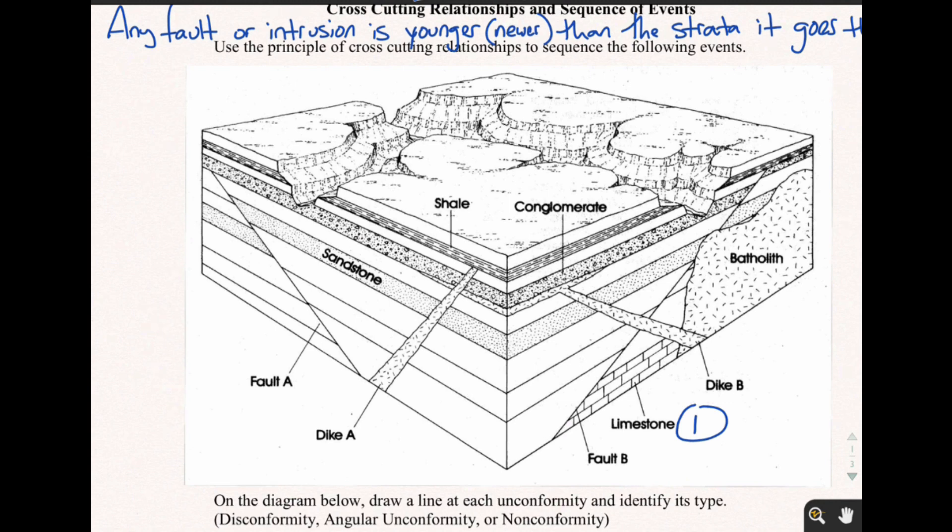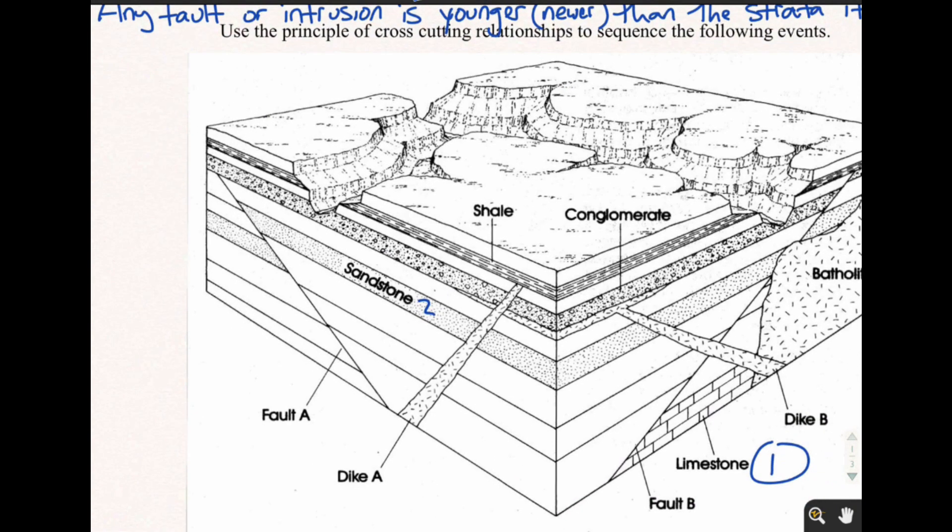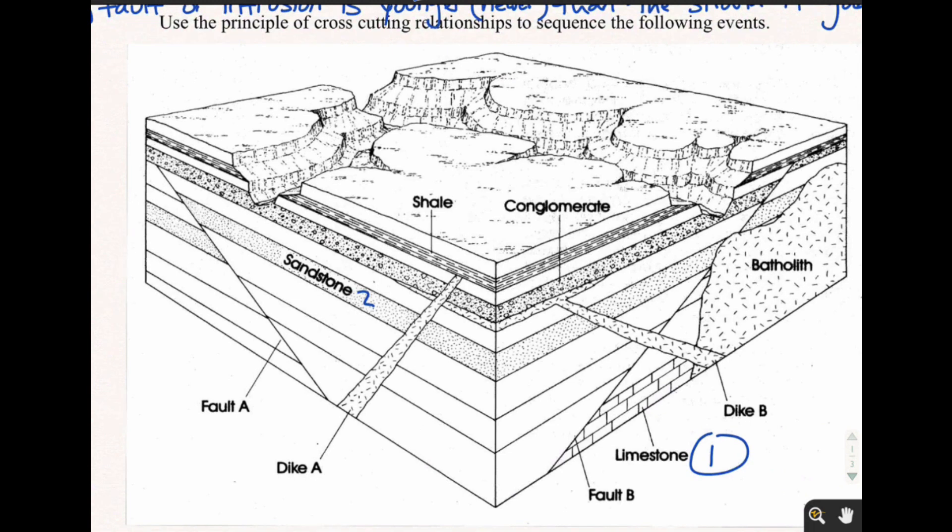The second thing that happened is the sandstone. Why the sandstone? Because everything else either cuts through or goes on top of the sandstone. So the sandstone is number two. So first the limestone, then the sandstone.